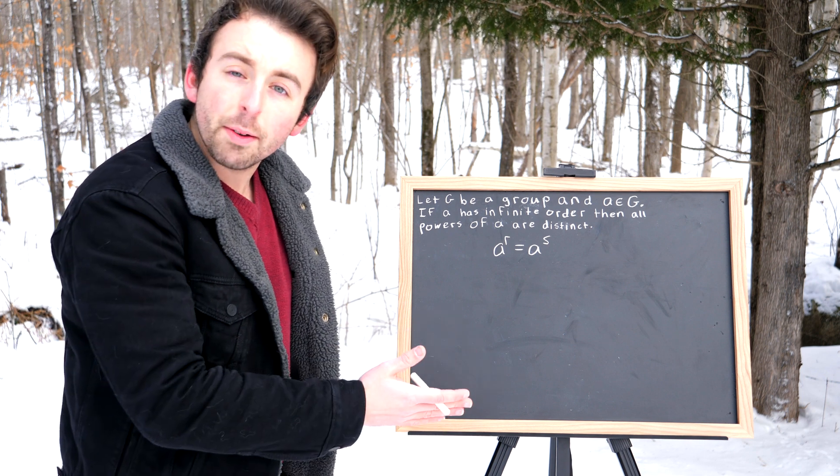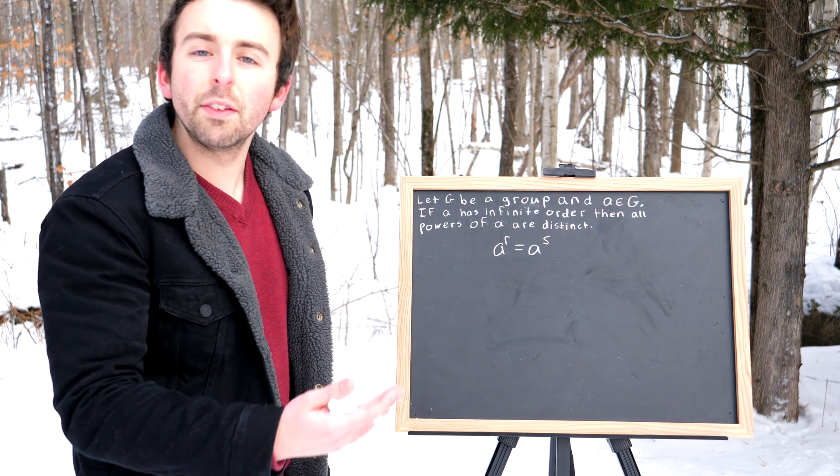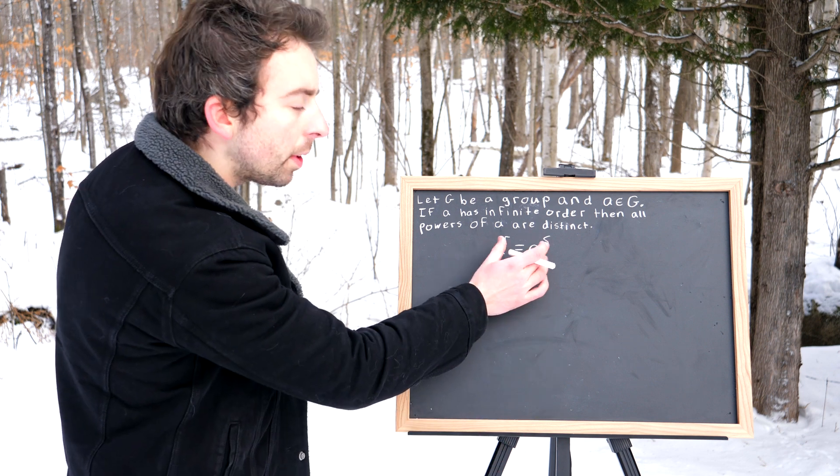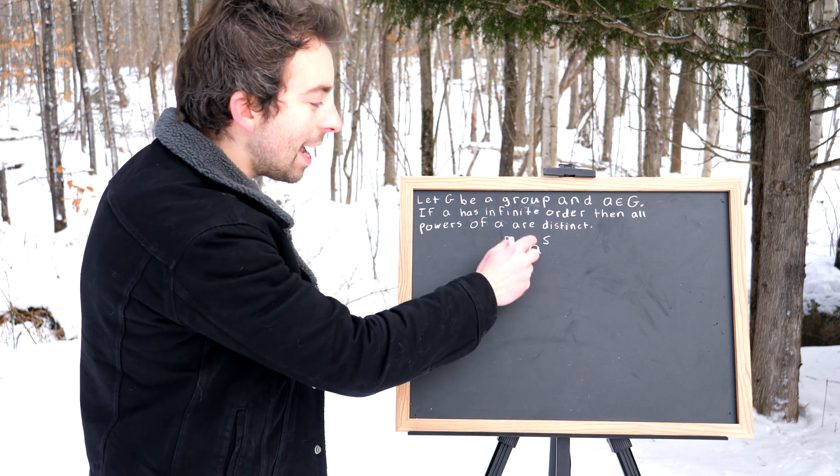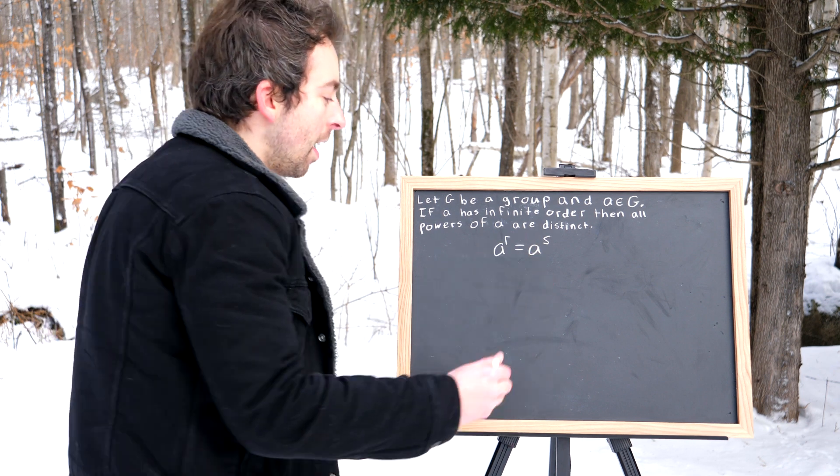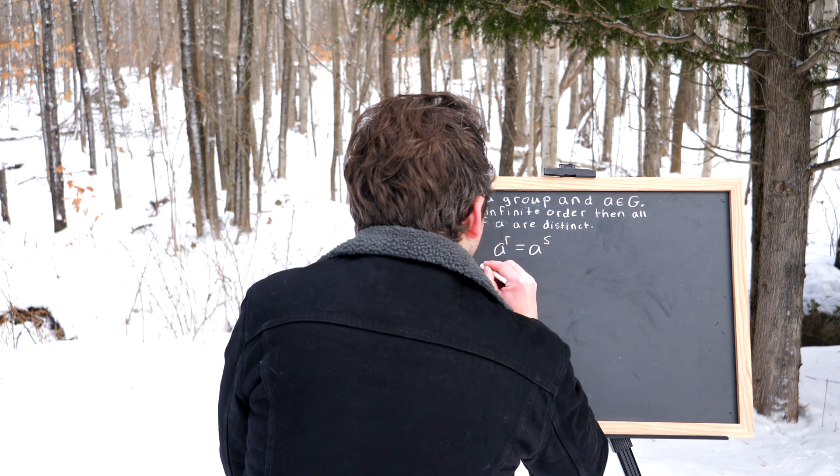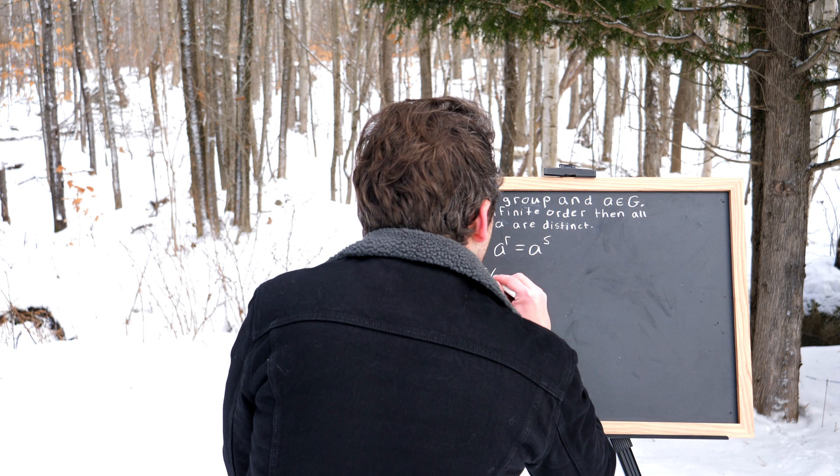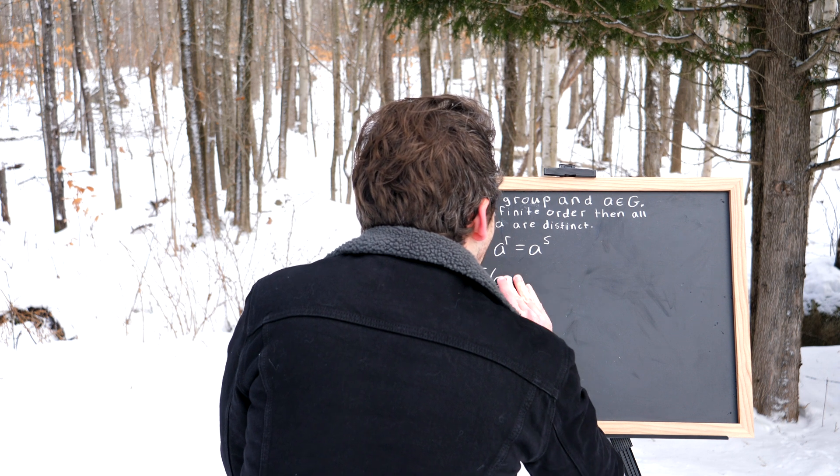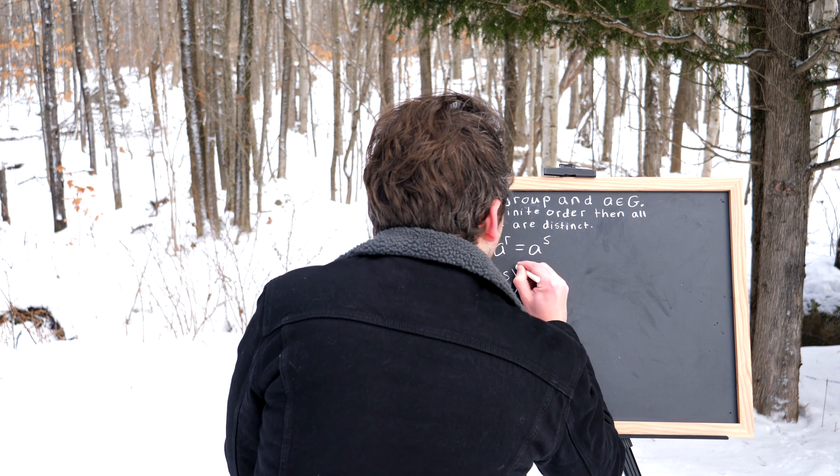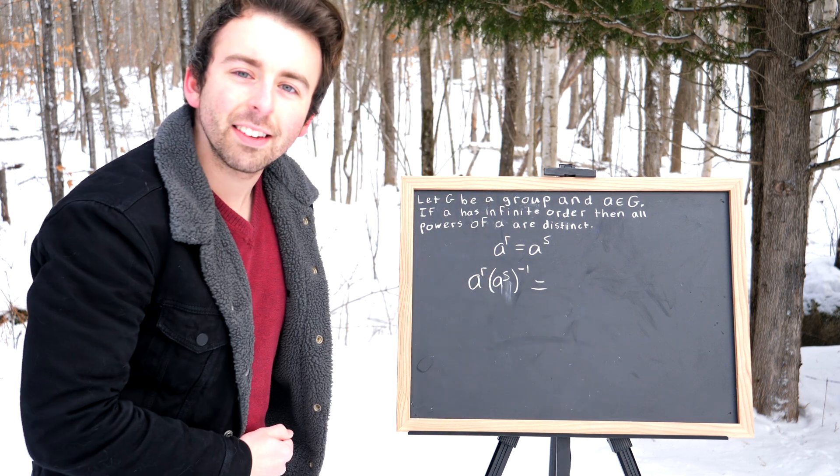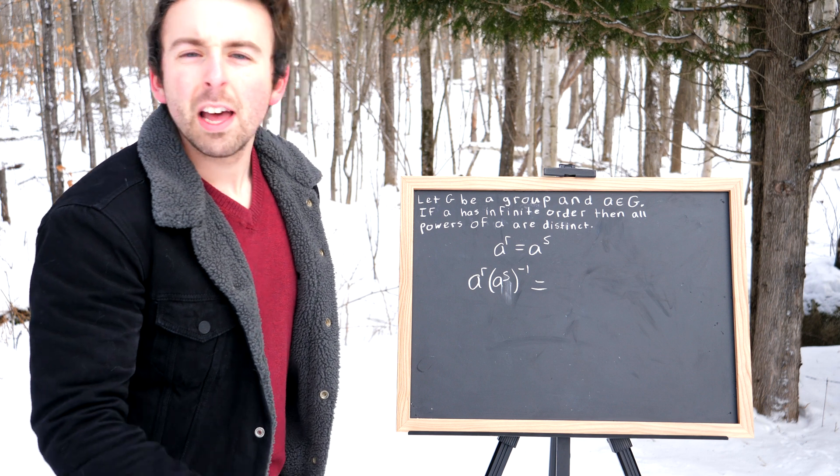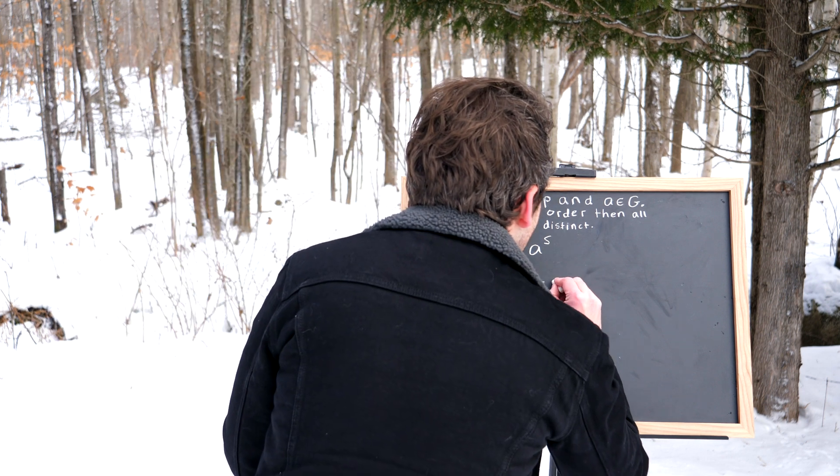Now because we're talking about groups, of course, we've got inverses, which means we can multiply both sides of this equation on the right, let's say, by A to the S inverse. If we do that, then on the left we have A to the R multiplied by A to the S inverse. And on the right we would have A to the S times A to the S inverse. But by definition, that's just the identity.